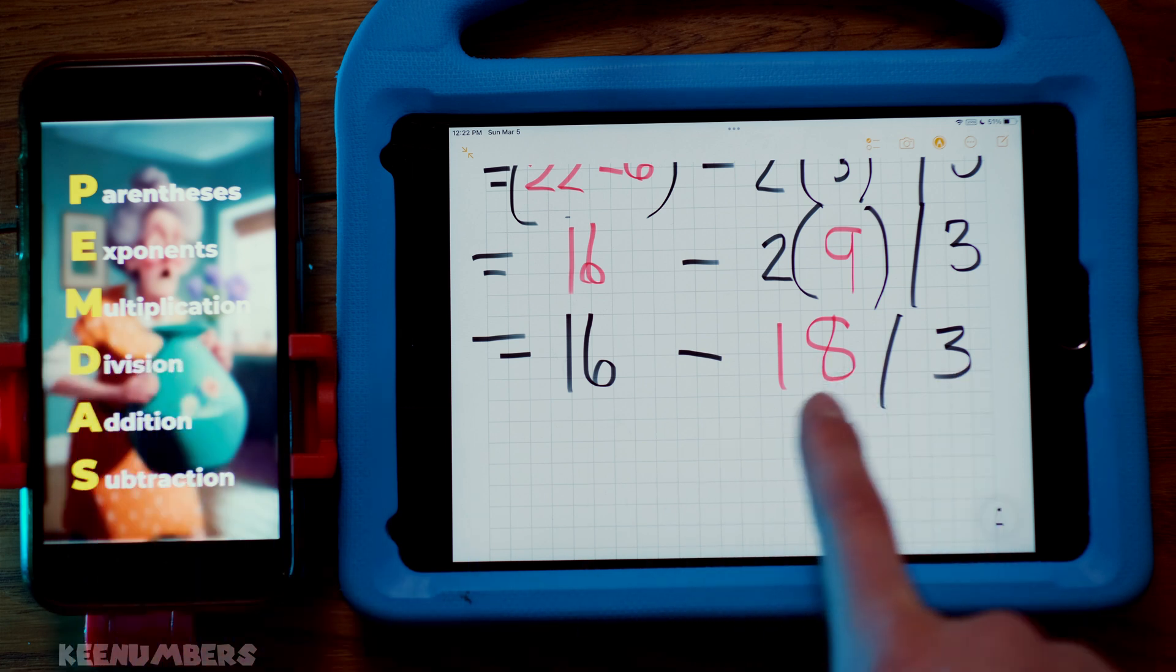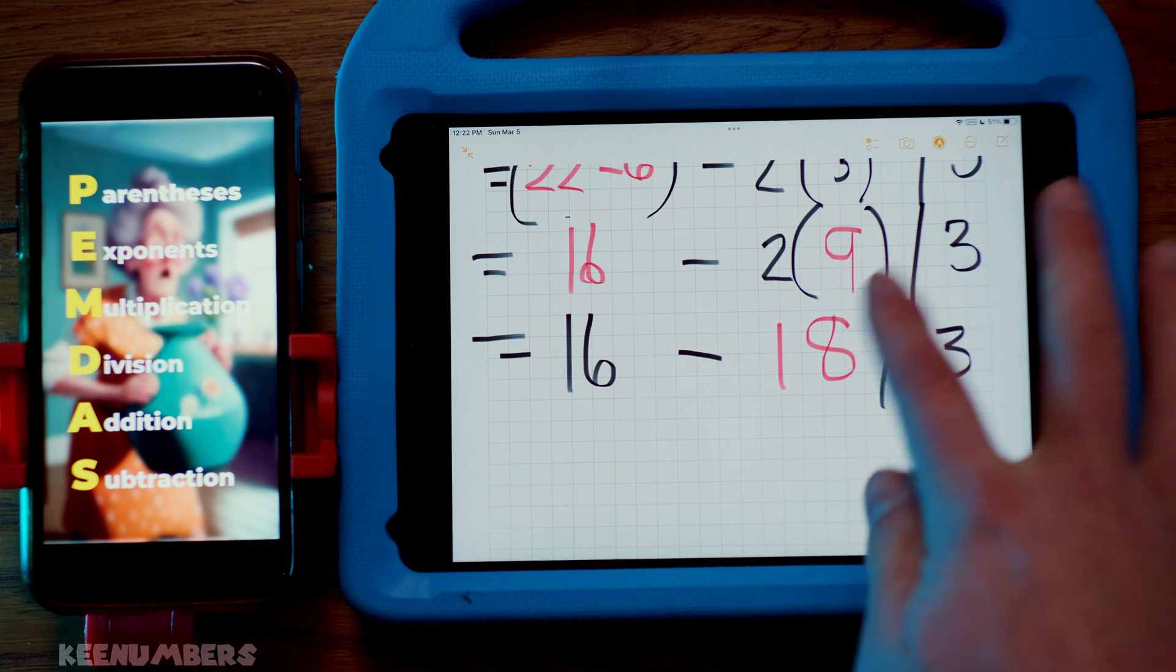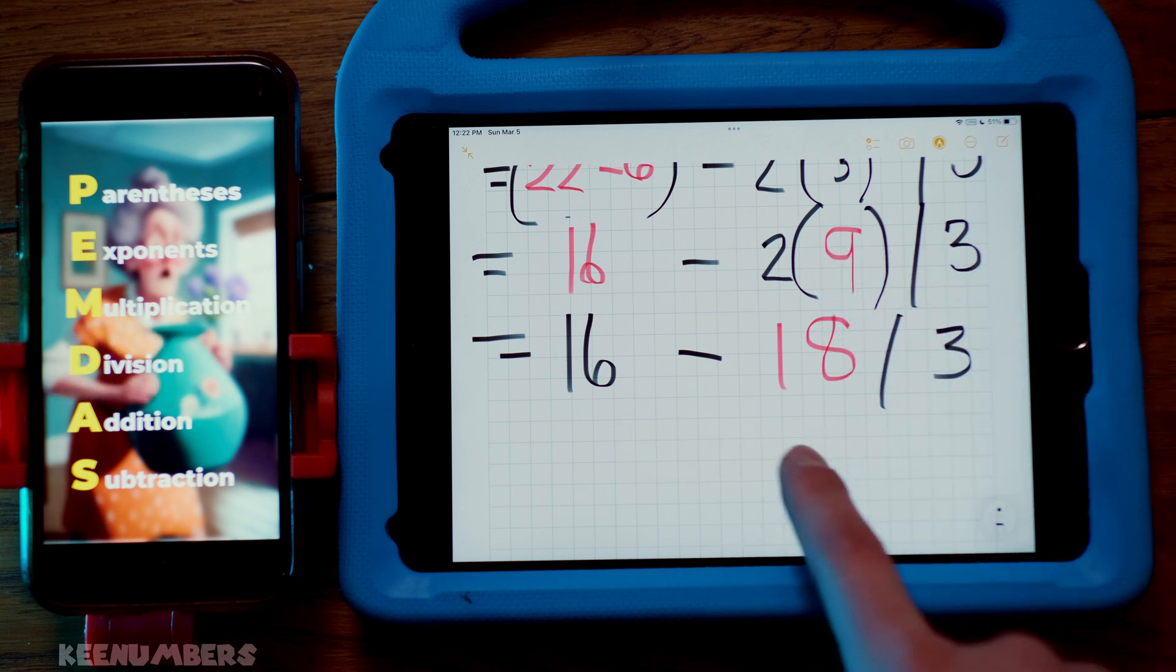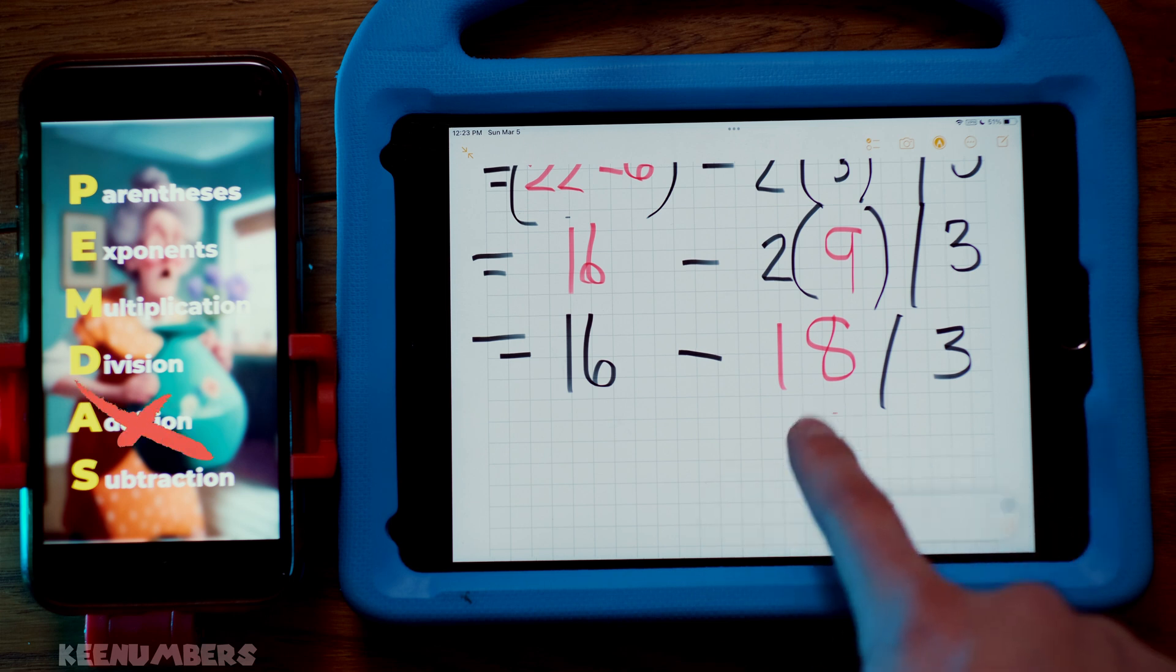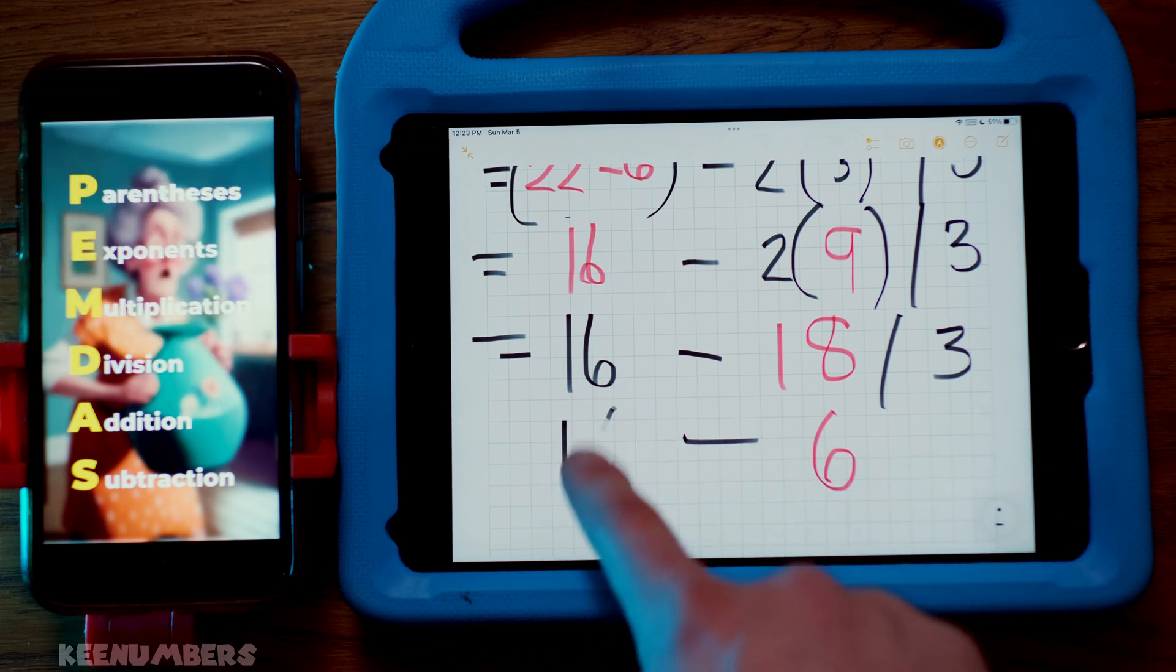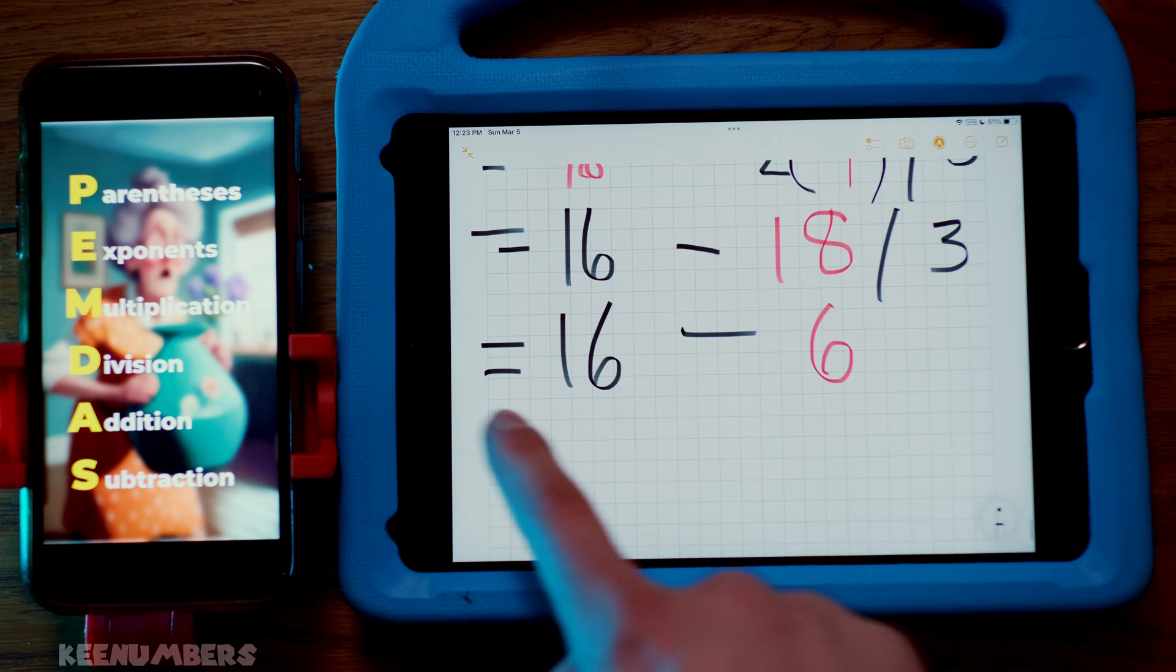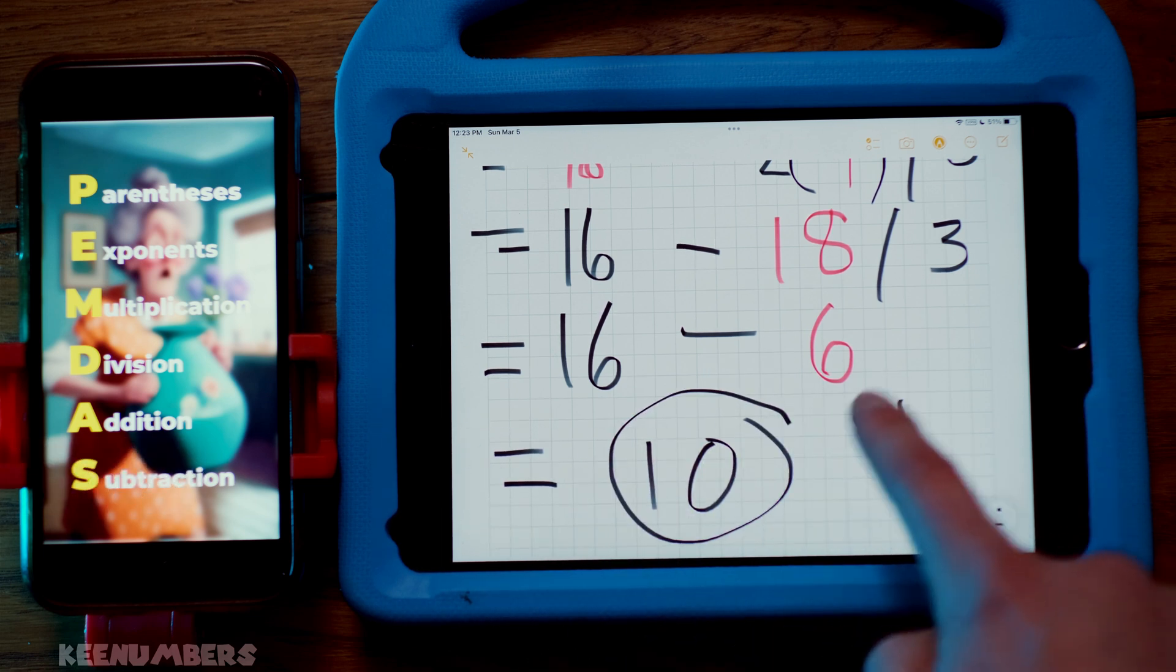Well, how many threes go into 18? And we could have simplified this here. Three could have gone into nine three times. Common factor of three, but we didn't. It's okay. 18 divided by three. If you have 18 pizzas, you share it with three friends. That means each friend gets six pizzas. And then you're gonna finish this problem up. And it's a nice answer. You get a jolly old ten. Woohoo!